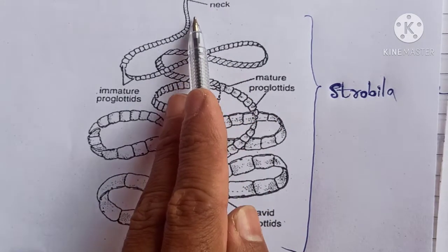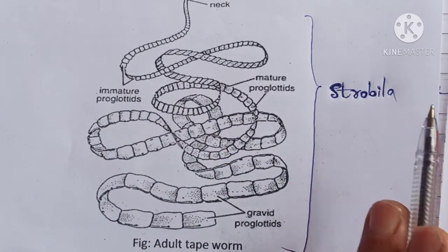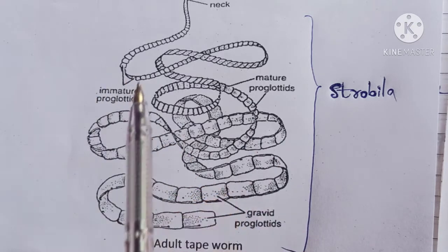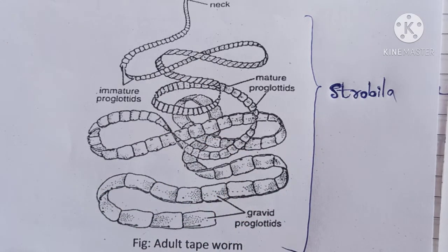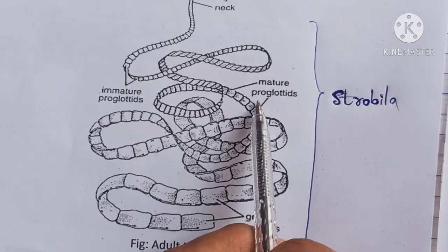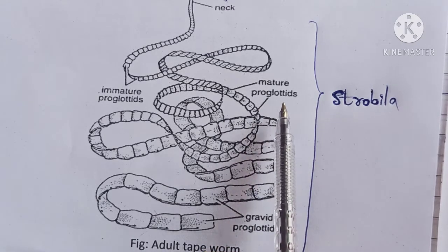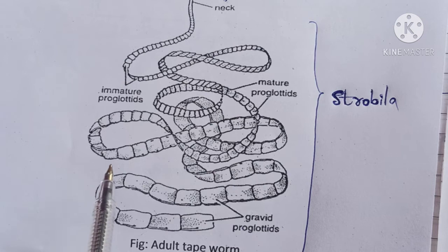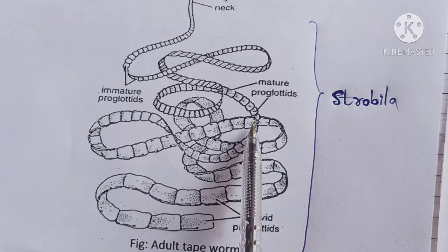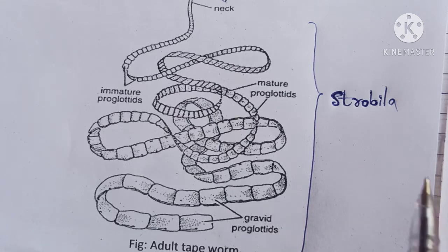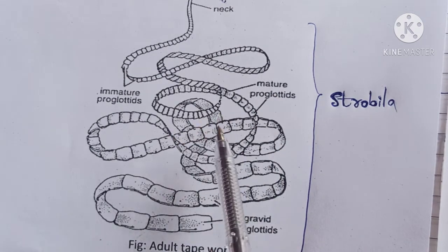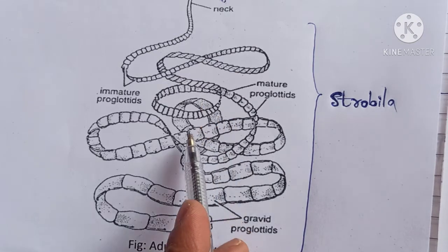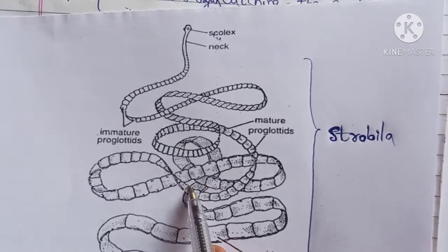The strobila is also called body segments and is the longest and main bulk of the body. This entire part is the strobila — the main part of Taenia solium, measuring almost three meters in length. The strobila consists of proglotids, and each proglotid contains male and female reproductive organs, a part of the excretory system, a part of the nervous system, and a genital opening.